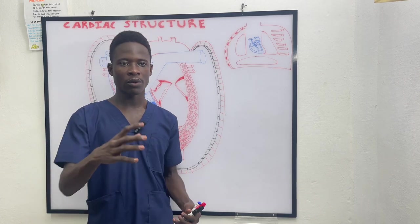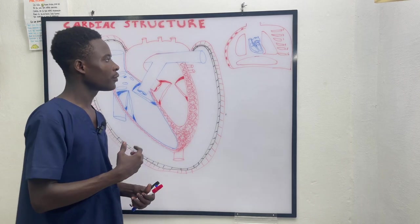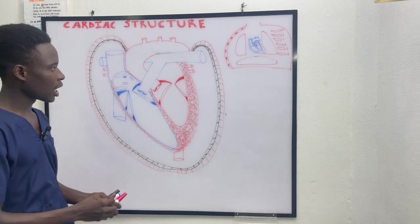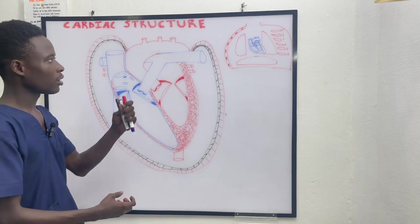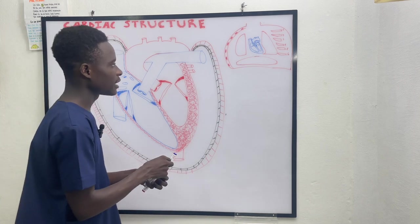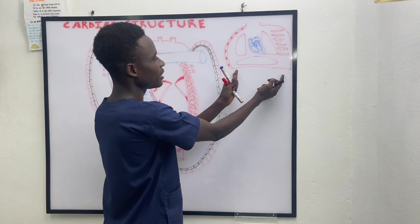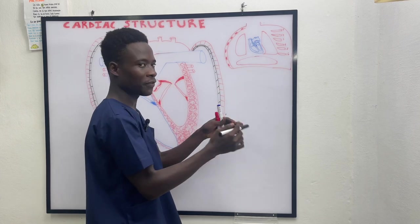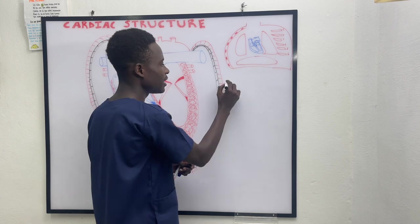Hello, welcome to my YouTube channel. Today we are going to talk about cardiac structure. Let's take general concepts of the heart. The heart is located in the chest cavity, but the heart has a specific place in which we can find it, that is the middle mediastinum.